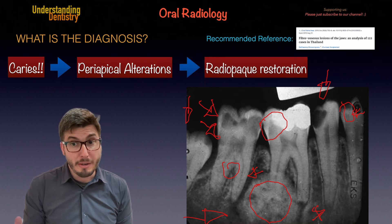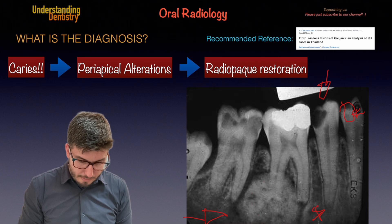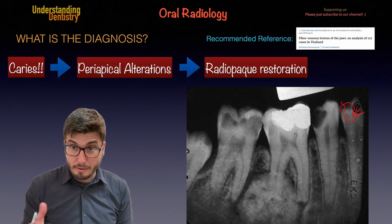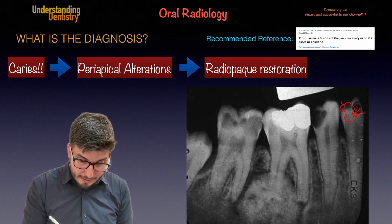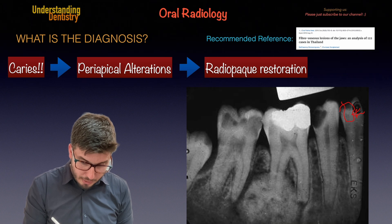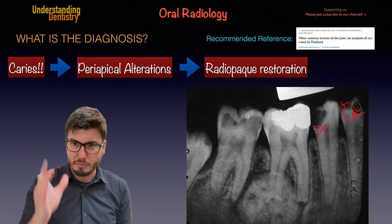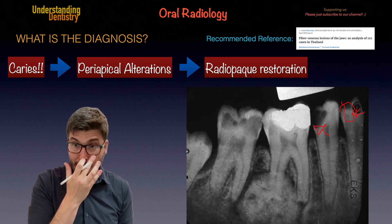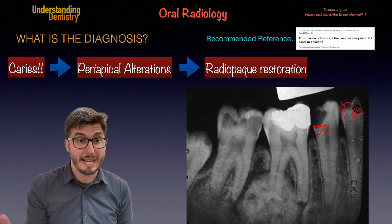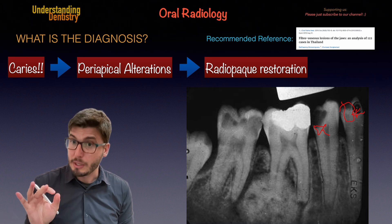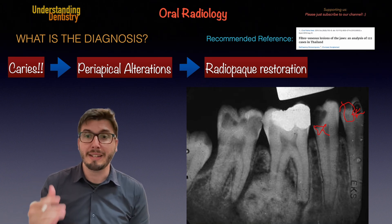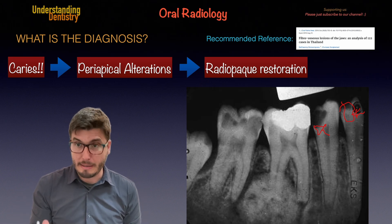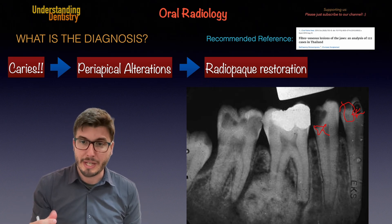We also need to diagnose the radiopaque restoration. Looking at the radiopaque alteration — do we have an overhang? Yes, we have a little bit of overhang. Take a look at this contact point and the shape of this mesial surface — there is a flat shape, it's not in continuation with the enamel below it. So of course that's not adequate. We need to be careful to understand the radiographs and diagnose them carefully.